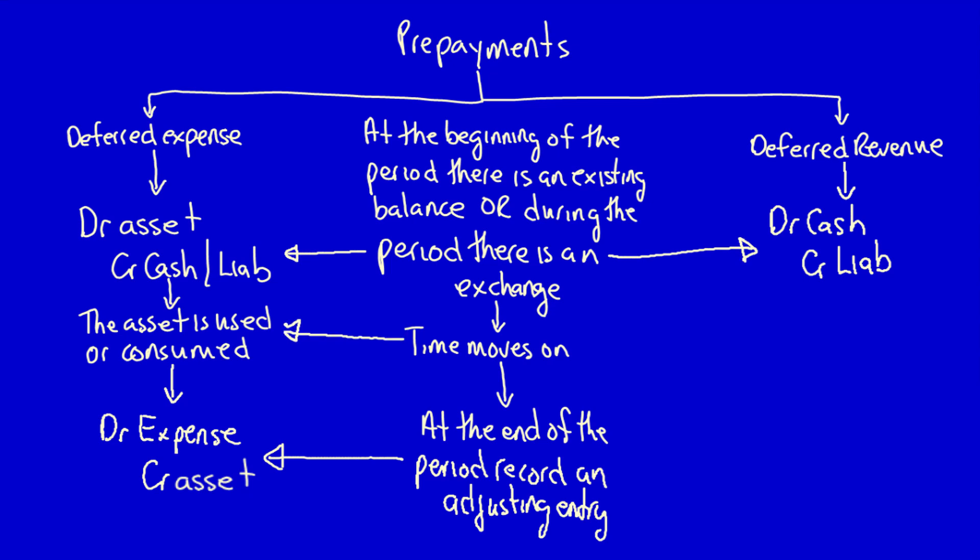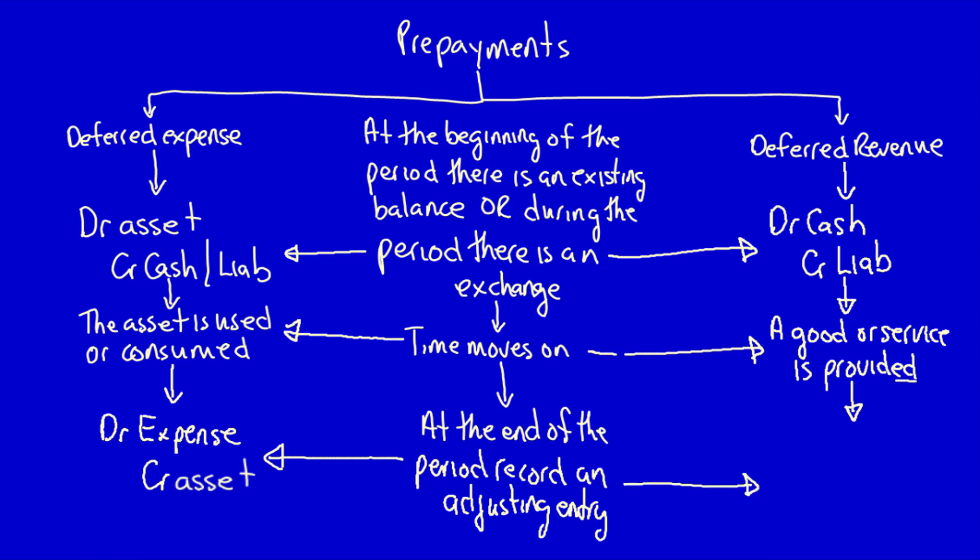Then time moves on. In this case, a good or service is provided. Therefore, at the end of the period we have to record an adjusting entry. This adjusting entry recognizes that there is no longer a liability because we no longer owe anybody anything. Instead, we can now recognize our revenue because we have earned it.